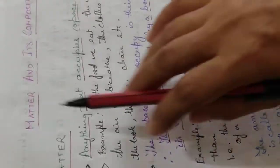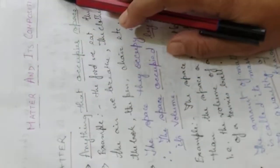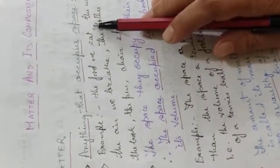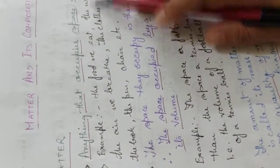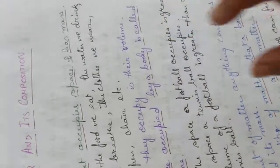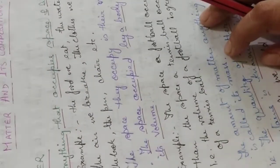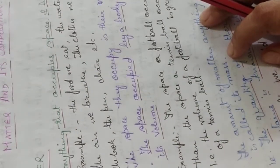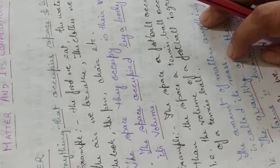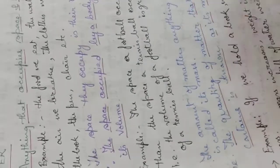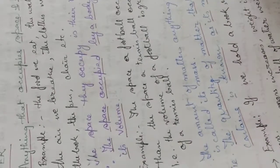Now I am starting with matter and its composition. What is matter? Anything that occupies space and has mass is called matter. For example, the food we are eating, the water we are drinking, the air we are breathing, the clothes we are wearing, the book, pen, chair — whatever is around us, whatever we are using — all are matter. All are occupying space and have mass.